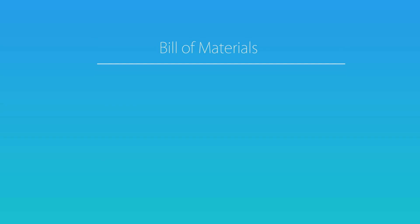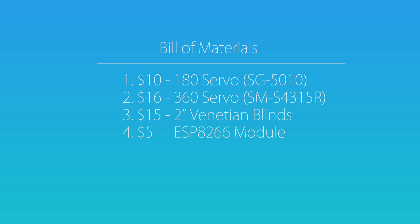Okay, and now we have the bill of materials for the project. So first we're going to start out with the 180 degree servo. I bought that on Adafruit for $10 I think. And then I bought the 360 degree continuous servo on Amazon for around $16. The venetian blinds, 2 inch venetian blinds were about $15. And the ESP module that I was using is around $5 to $10. I think I got it for $5.